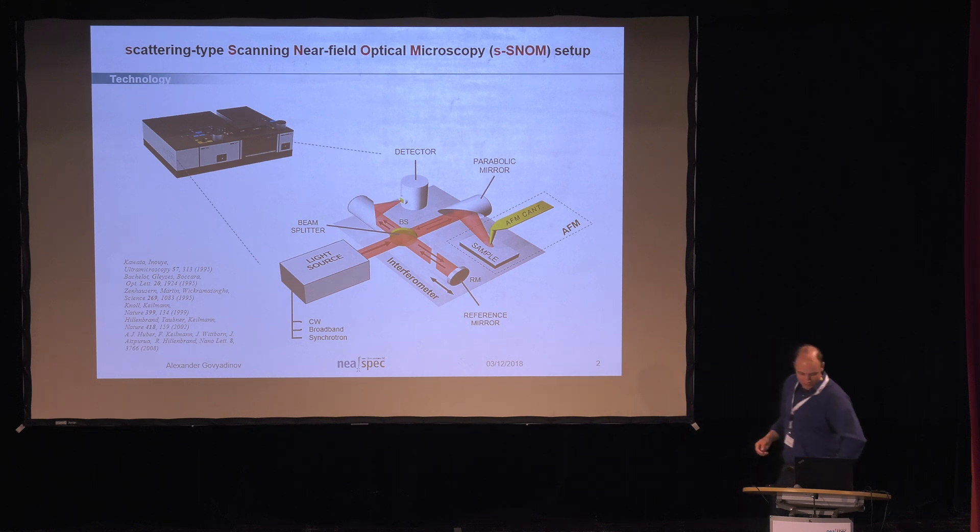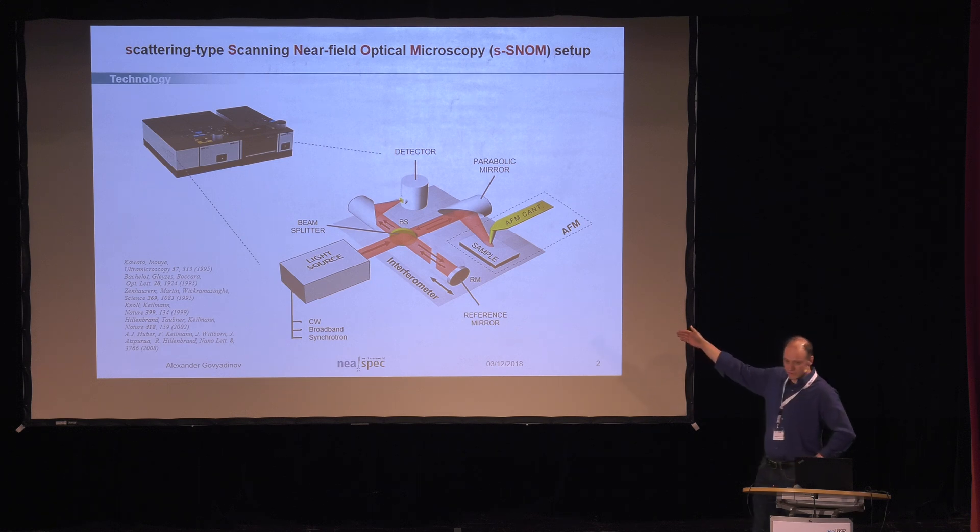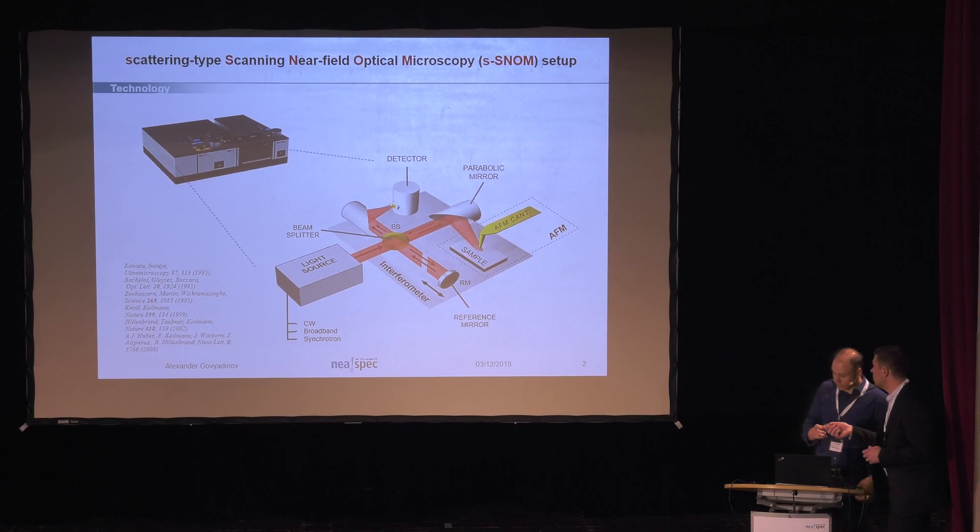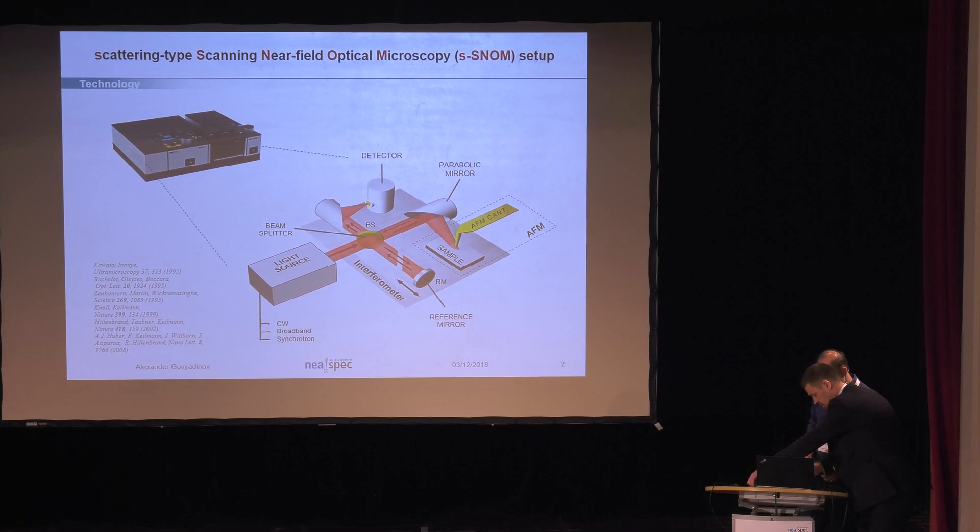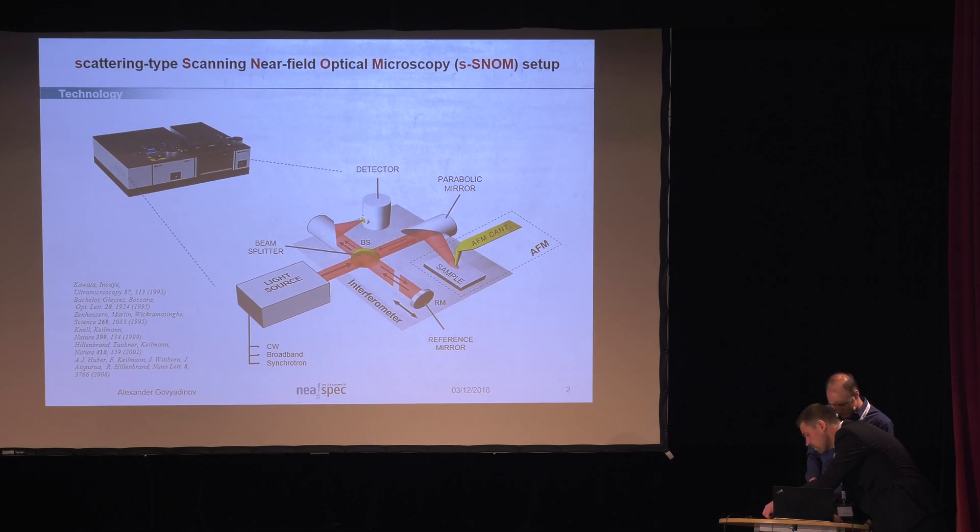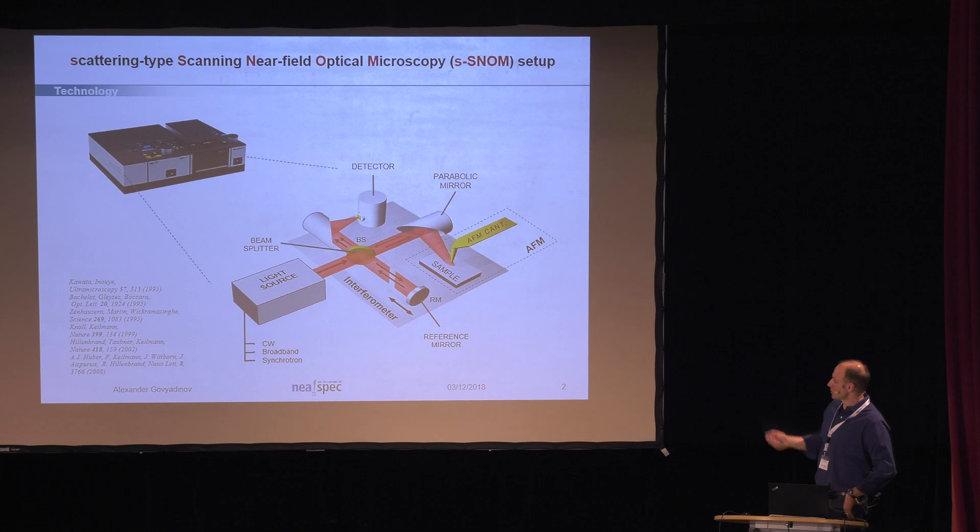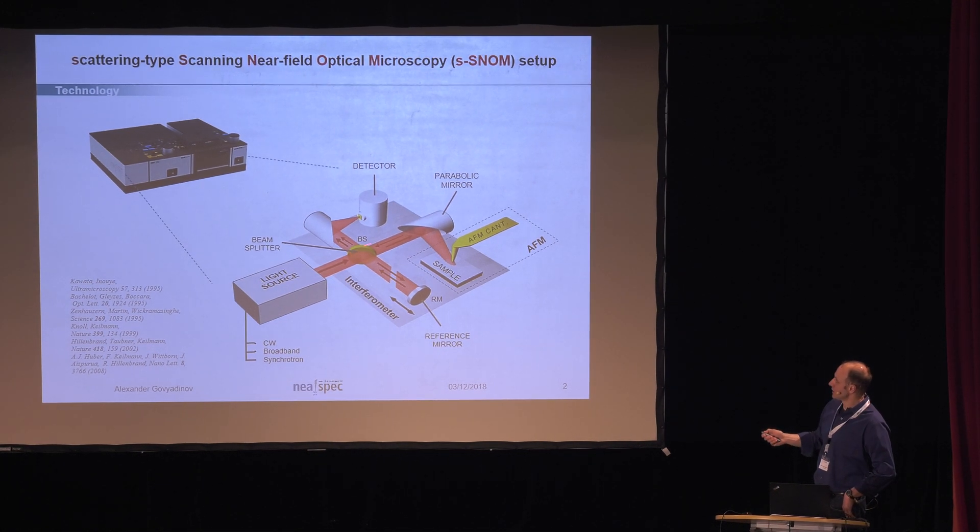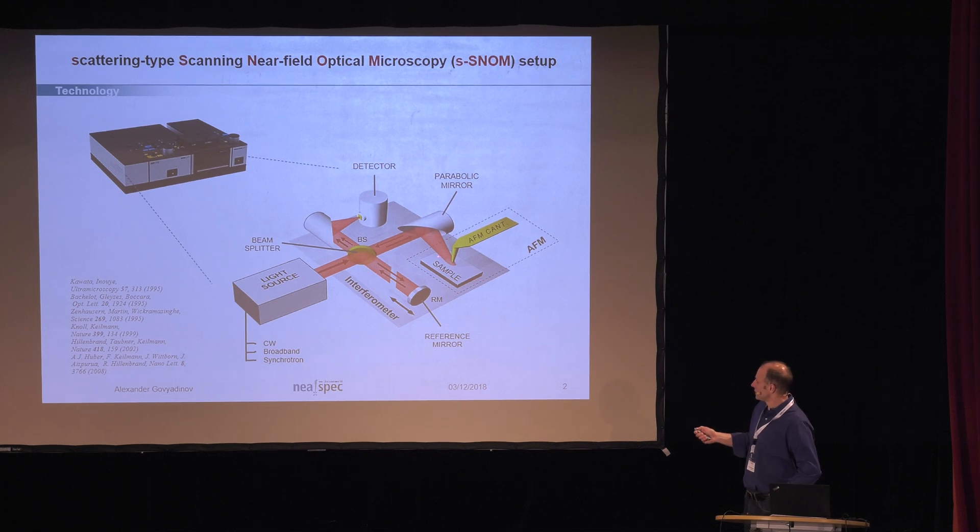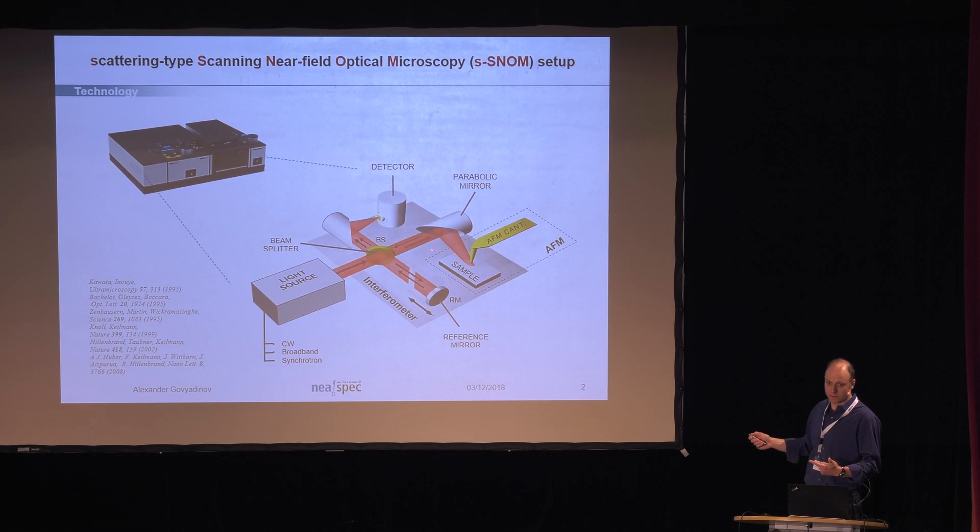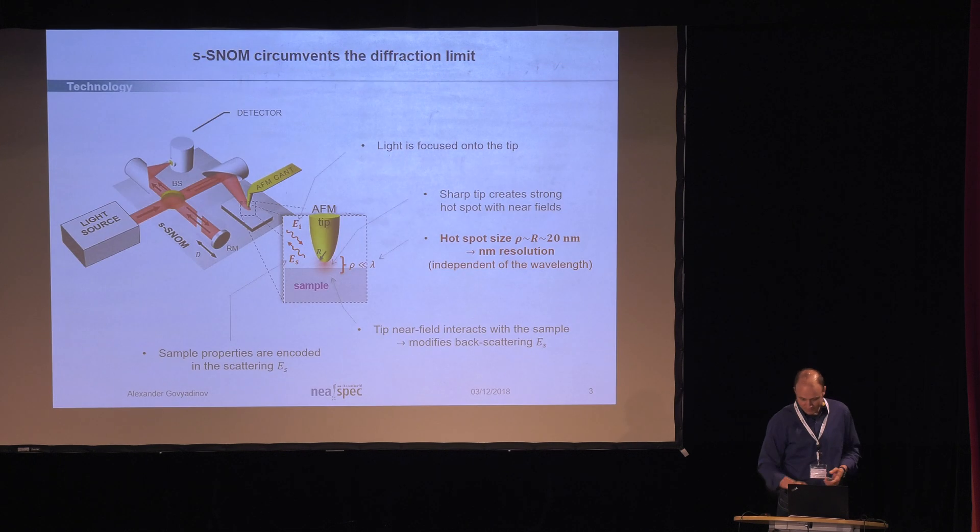Then, the second part is the interferometer itself. So the point of interferometer is to split the beam and recombine it to the detector while controlling the delay between the two beams. And the third part is, of course, the AFM. So what the light source does, it provides the illumination, which is then split up into a reference arm and sample arm.